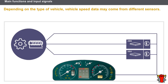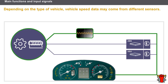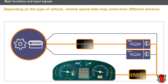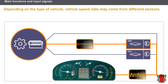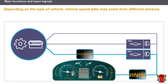Let's look first at the Speed Indicator. Depending on the type of vehicle, vehicle speed data may come from different sensors. The transmission sensor sends speed data directly to the Instrument Panel. By contrast, the wheel speed sensor transmits the data via the ABS computer, which calculates the vehicle speed and sends it to the Instrument Panel via the multiplex network. If the vehicle does not have ABS, the vehicle speed computer fulfills the function of the ABS computer.